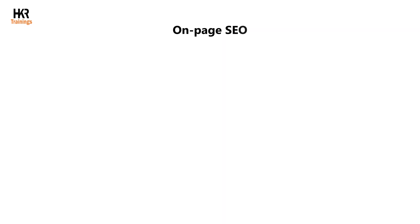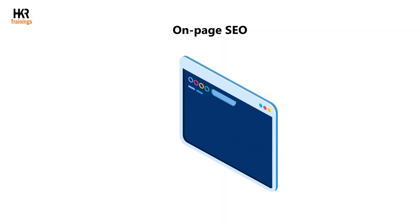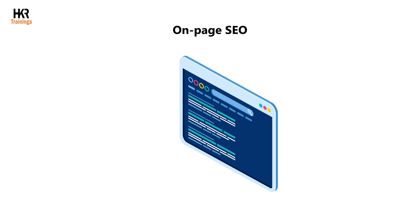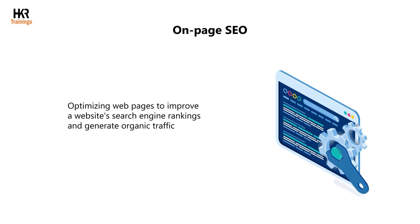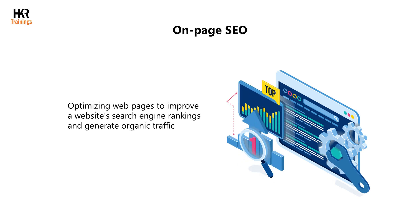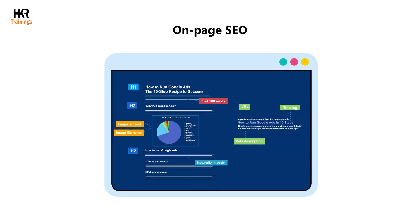On-page SEO, also known as on-site SEO, is the practice of optimizing web pages to improve a website's search engine rankings and generate organic traffic. On-page SEO involves optimizing headlines, HTML tags — title, meta, and header — and images, apart from publishing relevant high-quality content.